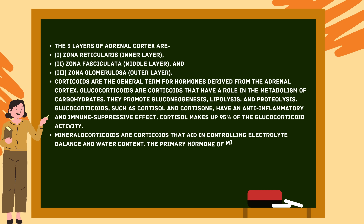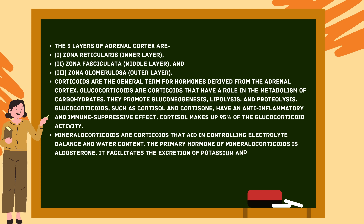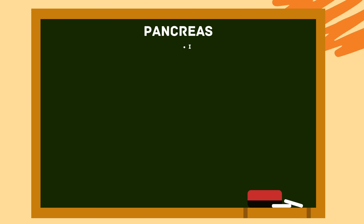Cortisol makes up 95% of glucocorticoid activity. Mineralocorticoids are corticoids that aid in controlling electrolyte balance and water content. The primary mineralocorticoid hormone is aldosterone. It facilitates the excretion of potassium and phosphate ions as well as the reabsorption of sodium ions and water.